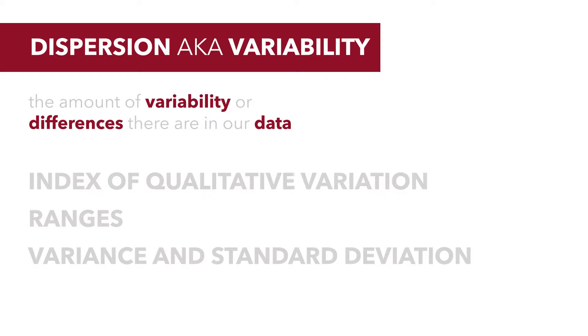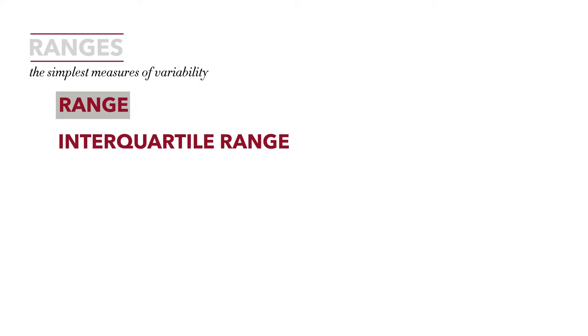In this tutorial we'll talk about two types of ranges. We're going to talk about the range and the interquartile range. These are the simplest measures of variability, and the range particularly is simple. It's calculated by taking the highest value and subtracting the lowest value.